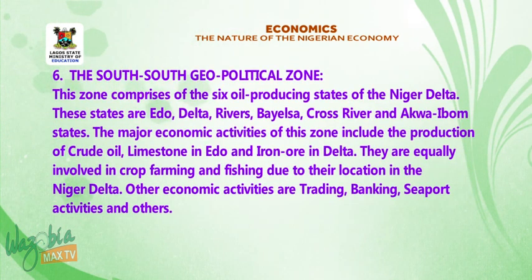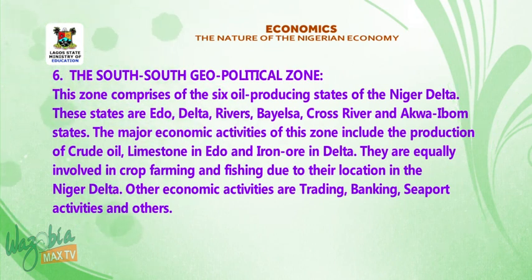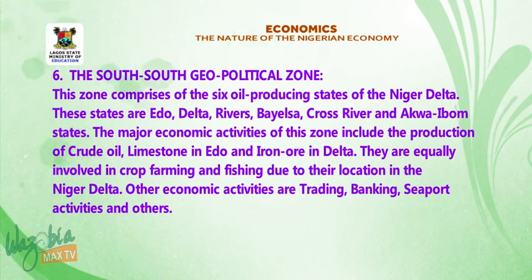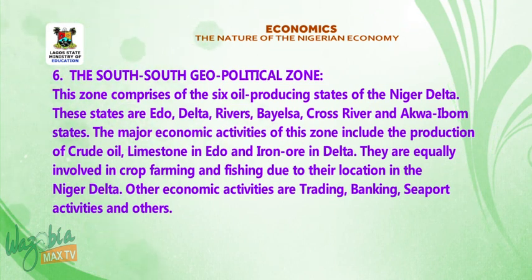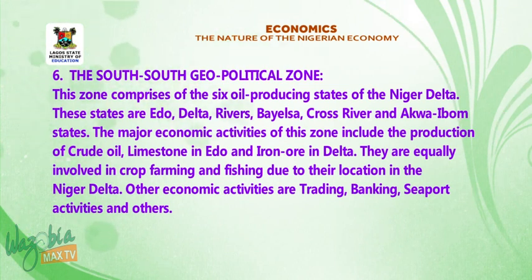Number six, the south-south geopolitical zone. This zone comprises the six oil-producing states of the Niger Delta. These states are Edo, Delta, Rivers, Bayelsa, Cross River, and Akwa Ibom State. The major economic activities of this zone include the production of crude oil, limestone in Edo, and iron ore in Delta. They are equally involved in crop farming and fishing due to their location in the Niger Delta. Other economic activities include trading, banking, and seaport activities.